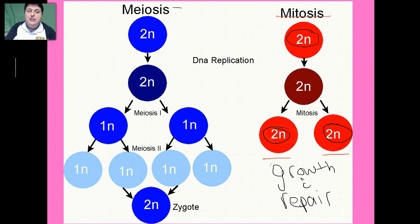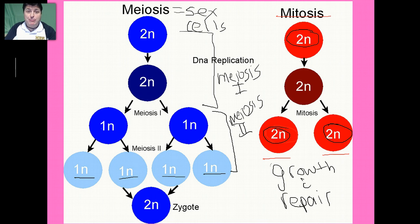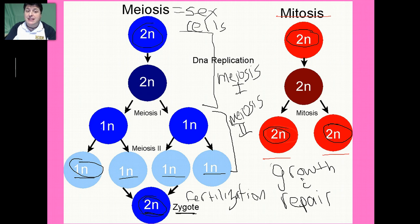In meiosis, it's all about making sex cells. To make sex cells, we need them to have half the chromosome number. So meiosis involves two divisions: the first is called meiosis I and the second is called meiosis II. At the end of meiosis, we get four cells that are haploid — half the chromosome number we started with. Meiosis needs two divisions to make haploid gametes so that each generation will have the same chromosome number as the previous one.